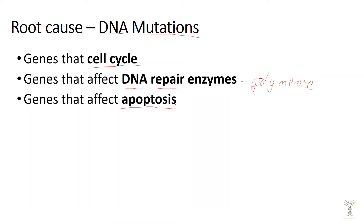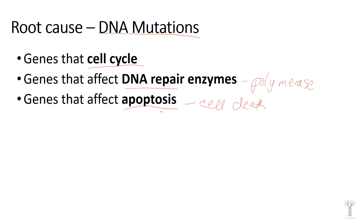We have genes that will trigger apoptosis, which is a programmed cell death process. This is important because cells will eventually accumulate DNA mutations or get old and not function properly. It is important for apoptosis to occur so that those mutated cells don't continue going through cell division.